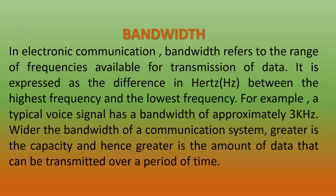Next, we can see what is bandwidth. Bandwidth means it is a range of frequency available for the transmission of data. Normally, bandwidth is measured in terms of hertz. In analog transmission, bandwidth is measured in terms of hertz, whereas in digital transmission, bandwidth is measured in terms of BPS — bits per second.